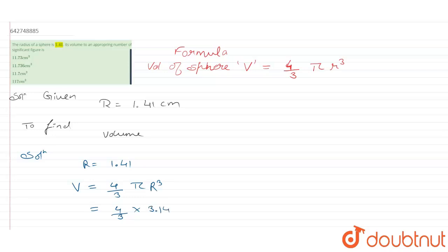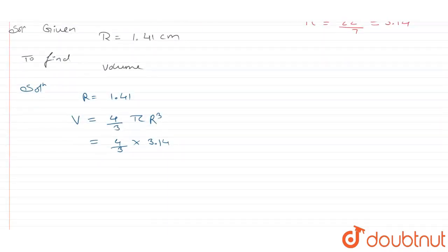4/3 into 3.14. Why 3.14? The value of π is 22/7 which is also calculated as 3.14. Continuing ahead with our solution, 4/3 into 3.14 into 1.41 cube.